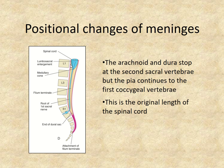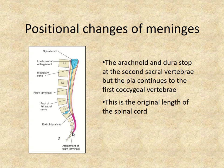The meninges also do not go the full length. The arachnoid and dura actually stop at S2, the second sacral vertebra. The pia — and in certain papers the pia is described as being collected together with the dura for final attachment — goes all the way to the first coccygeal vertebra as the filum terminale. Your text says the filum terminale is made of pia, but some sources say it's made of pia and dura, so that may not be entirely settled.